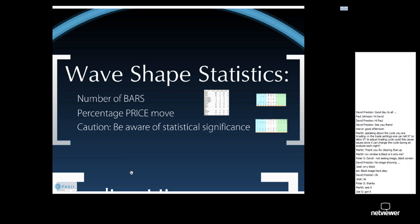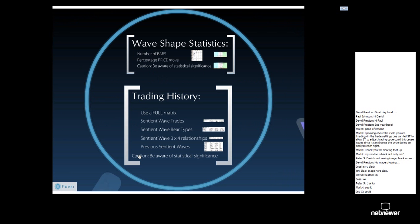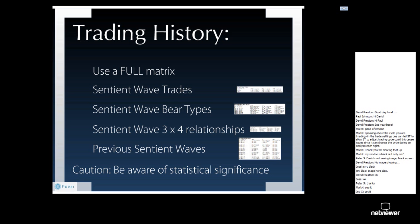What about under neutral underlying trend conditions? There are the relative figures for the neutral underlying trend conditions. So these are the statistics. What I am showing you is basically a way of understanding the market that you are trading, through looking at the wave-shaped statistics that Sentient Trader calculates automatically and provides for you.